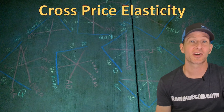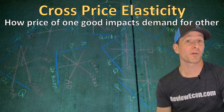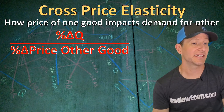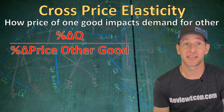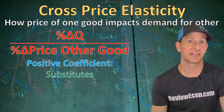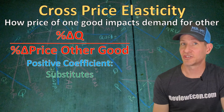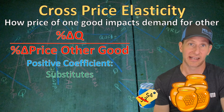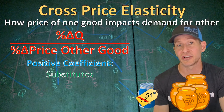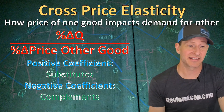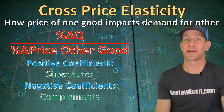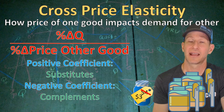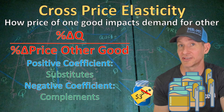The final type of elasticity you need to know is cross price elasticity. Cross price elasticity is about how the price of one good impacts the demand for a different good — specifically substitutes and complements. The formula is the percentage change in the quantity of one good divided by the percentage change in the price of the other good. A positive cross price elasticity coefficient means the goods are substitutes, like jelly and honey. When the price of jelly increases, people buy less jelly and increase demand for honey. A negative cross price elasticity coefficient means the goods are complements, like peanut butter and jelly. If the price of jelly decreases, people buy more jelly and more peanut butter as well.